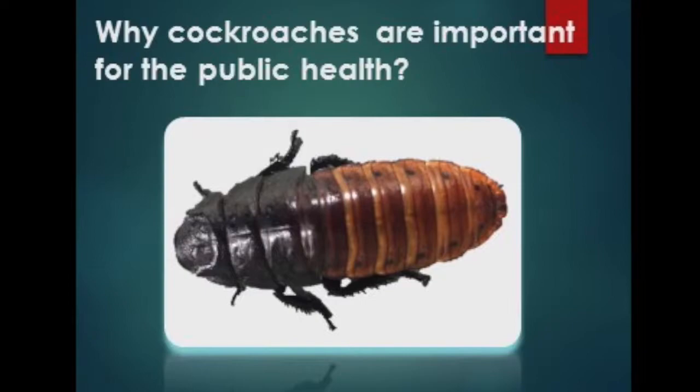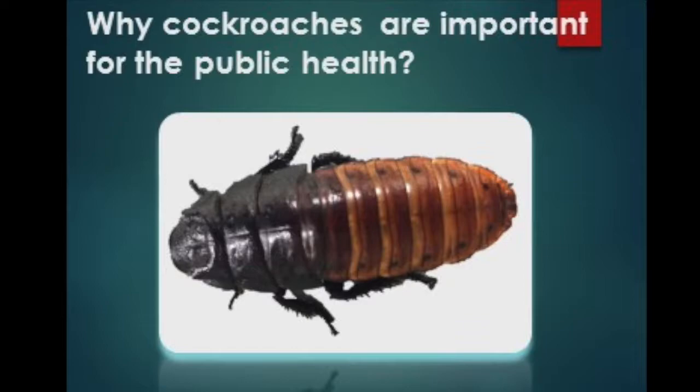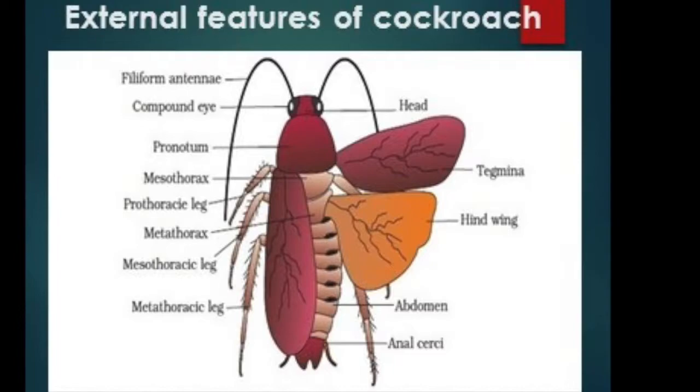There are more than 4,500 types of cockroaches in the world. They all belong to the class of insects, specifically Blattodea. Cockroaches are characterized by an oval outline and body usually flattened.